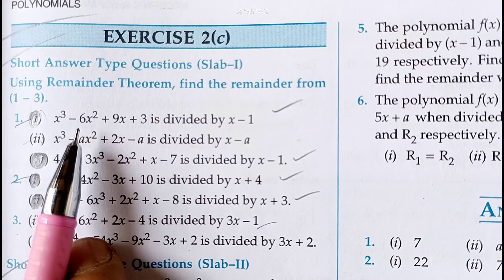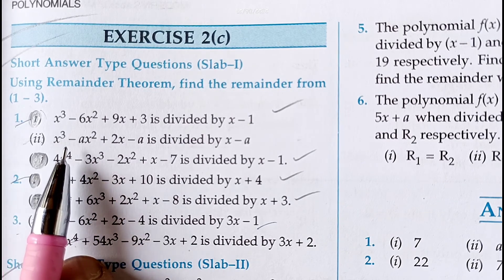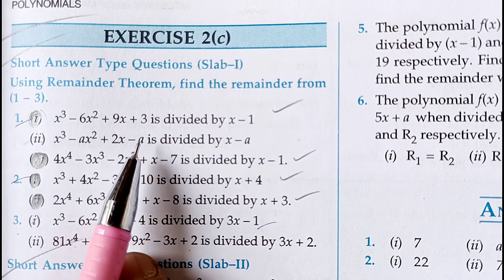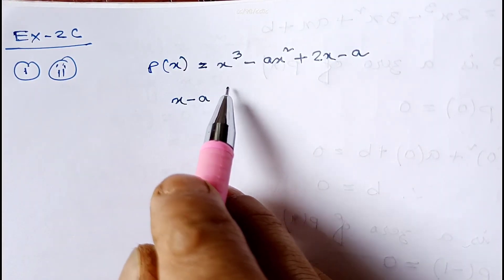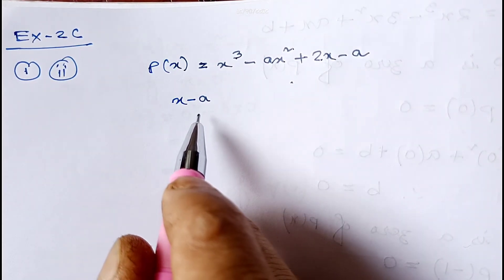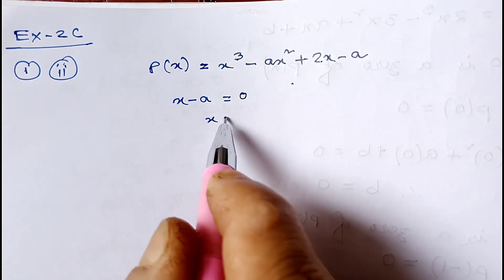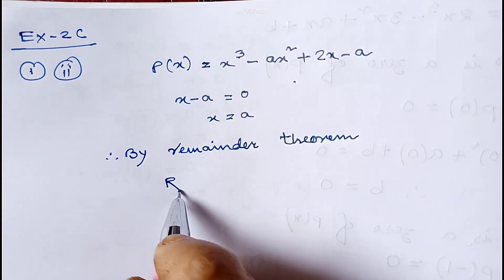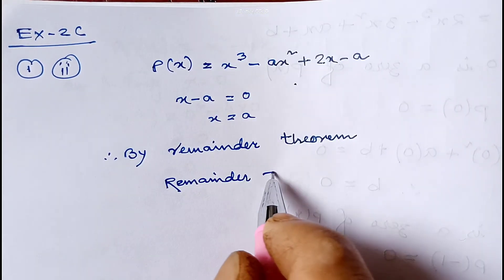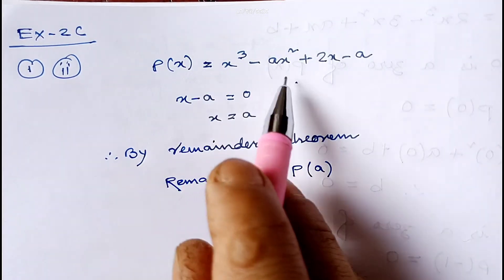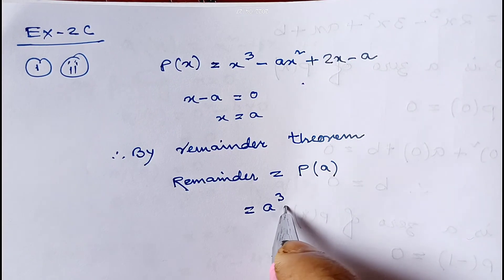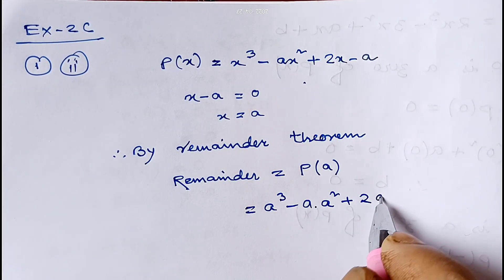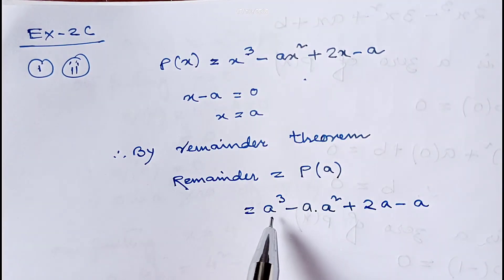Now let me show the sums of 2C. The first part of question number one I have already explained in this example, so let me show the second part. Here p(x) is x³ - ax² + 2x - a, and we have to divide it by x - a. Setting x - a = 0 gives x = a. Therefore by the remainder theorem, the remainder equals p(a).